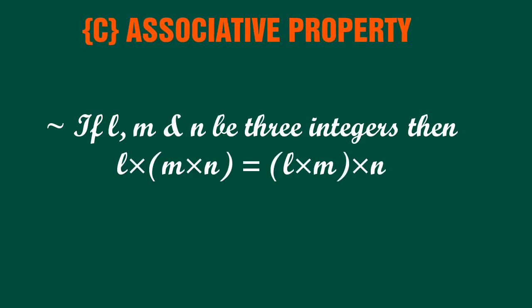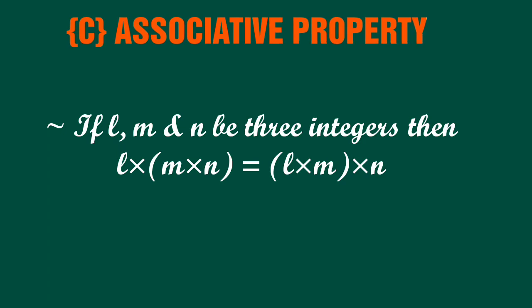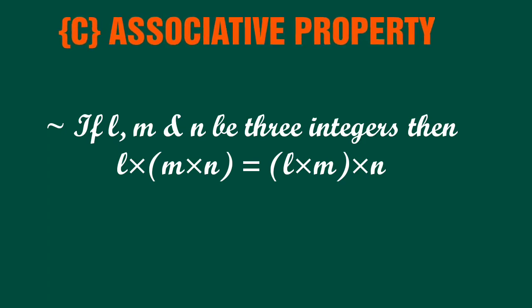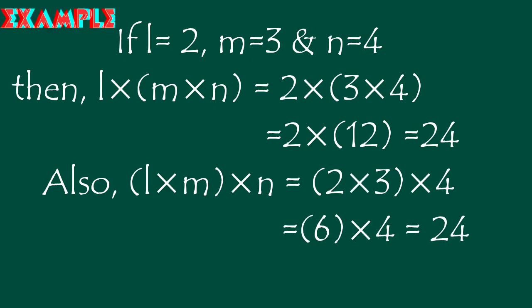Associative property: if l, m and n be three integers then l in bracket m into n equals l into m in bracket multiplied by n. If l equals 2, m equals 3 and n equals 4, if we apply associative property we will get the same answer that is 24.